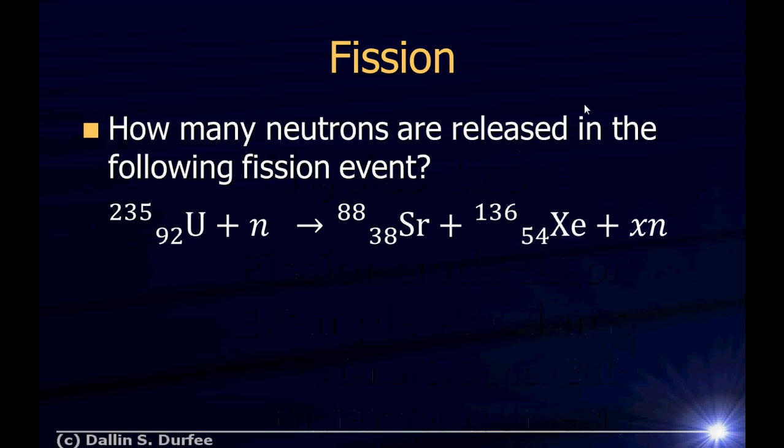How many neutrons are released in the following fission event? So I have uranium-235, a neutron bumps into it, and it takes it in, and then splits, becomes strontium-88, and xenon, 136, plus a bunch of neutrons.